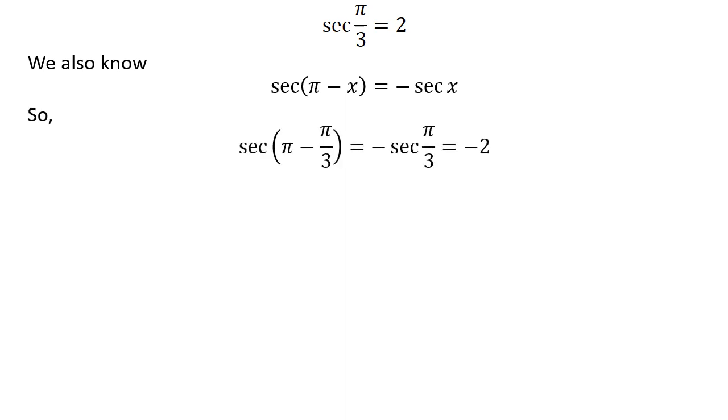So, sec(π - π/3) = -sec(π/3) = -2. As π - π/3 = 2π/3, we have sec(2π/3) = -2. Since 2π/3 lies in the closed interval [0, π] excluding π/2.